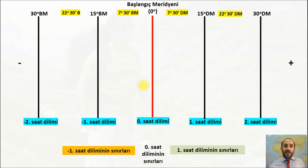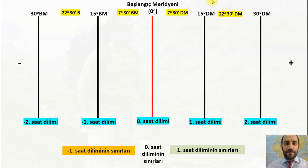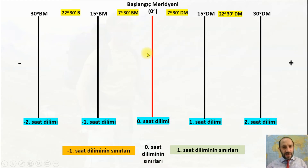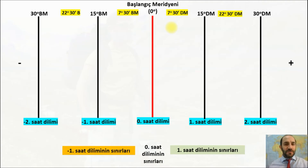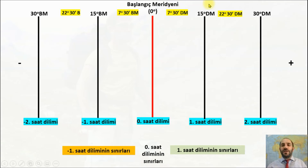Başlangıç meridyeninden başlayarak doğuya ve batıya doğru, 7.5° doğu ile 7.5° batı sıfırıncı saat dilimi olmak üzere, her 15 meridyende 1 saat değişiyor. Neden her 15 meridyende 1 saat? Çünkü ardışık 2 meridyen arası 4 dakika; 15 meridyen × 4 dakika = 60 dakika = 1 saat. Greenwich'in doğusu 7.5, batısı 7.5 sıfırıncı saat dilimi; 15 meridyen ekleyince 22.5 olur.